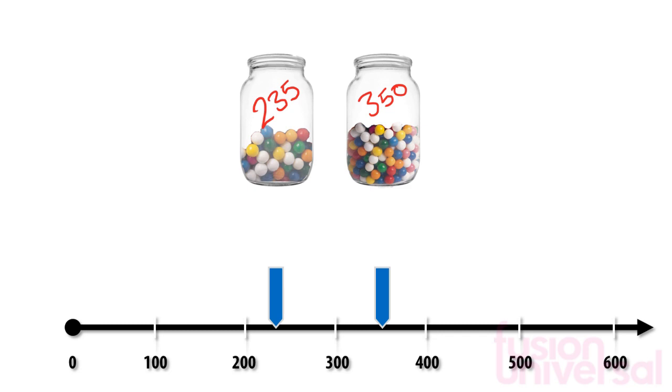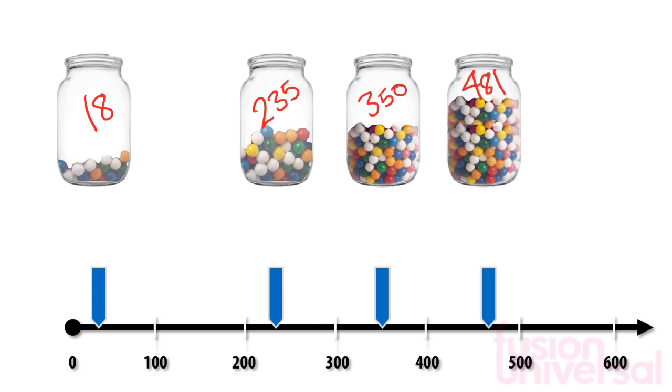There are 235 sweets in this jar. Here it is on the number line. Here is another jar containing 350 sweets, and another with 18, and a final one with 481 sweets in it.